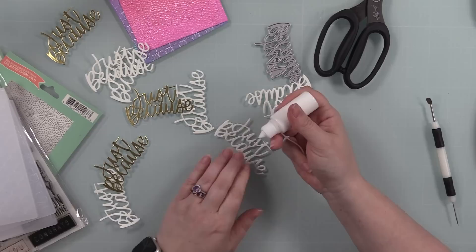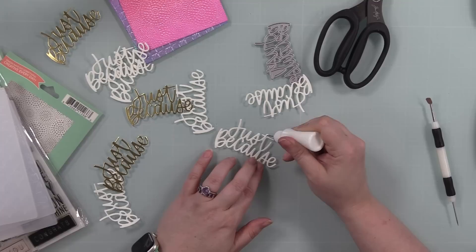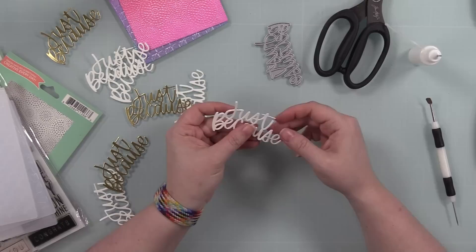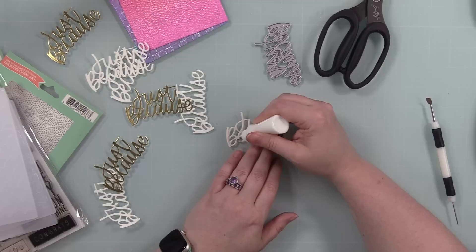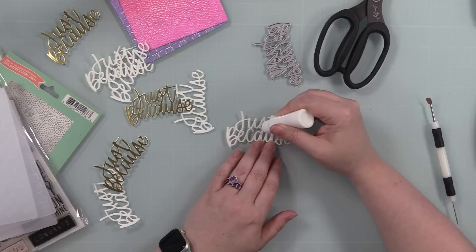All three of these embossing folders are from Simon. I did my go-to sandwich, which was my Platinum 6 die cut machine with the original platform, and I have two metal shims. That's just what works for me. Follow whatever embossing folders you're using—follow the manufacturer directions and instructions and things. Yeah, those panels embossed like a dream. Life was great.